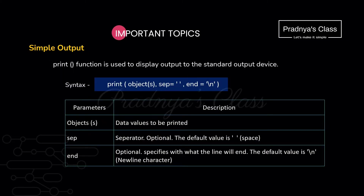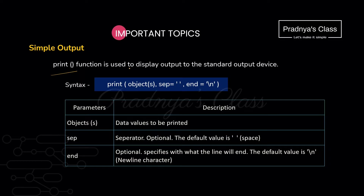This is also one of the important topics — how to use the print function. There are three parameters. The first is objects, meaning the message or value of the variable which you need to print. The second parameter is separator — it decides the separator between two objects, and by default it is a space. The third parameter is end, whose default value is backslash n, meaning after printing every object you will move to the next line. You can modify this.